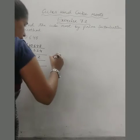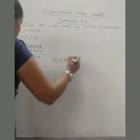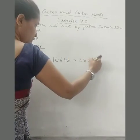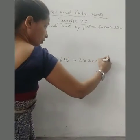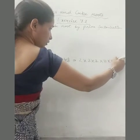So now see what factors we got. Prime factors 2 into 2 into 2 into 11 into 11 into 11.